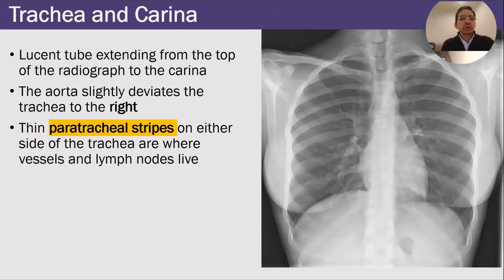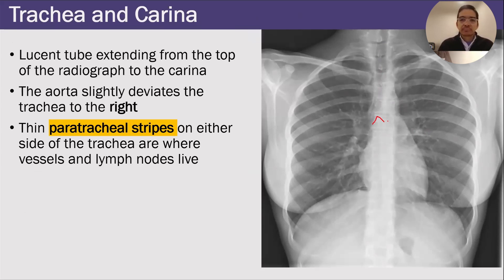Let's start with all of those anatomical structures, beginning with the trachea and the carina. The trachea is this lucent tube here. On an x-ray, it extends from the top of the film to where you have this triangular opacity that divides the trachea into two — and that's the carina. One normal thing you'll see is that the aorta causes slight deviation of the trachea to the right, and that's normal.